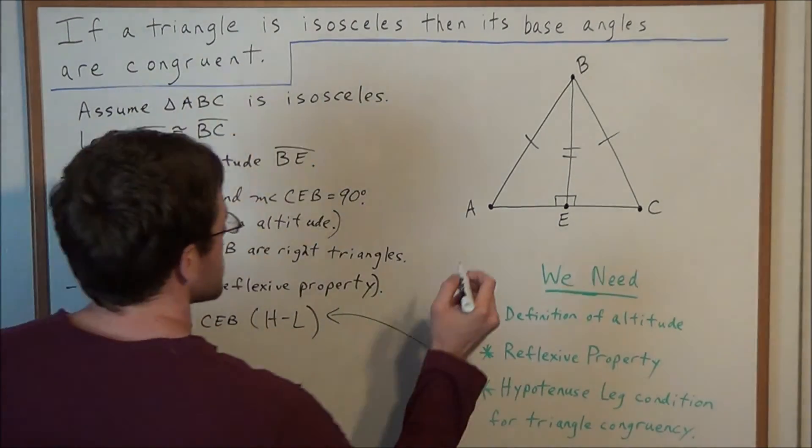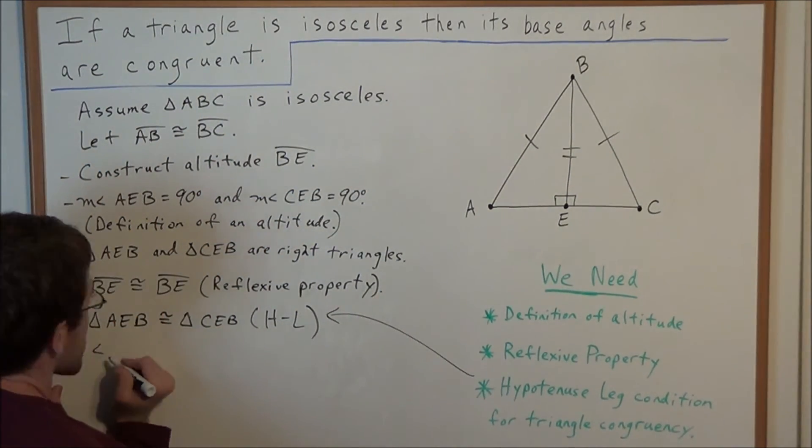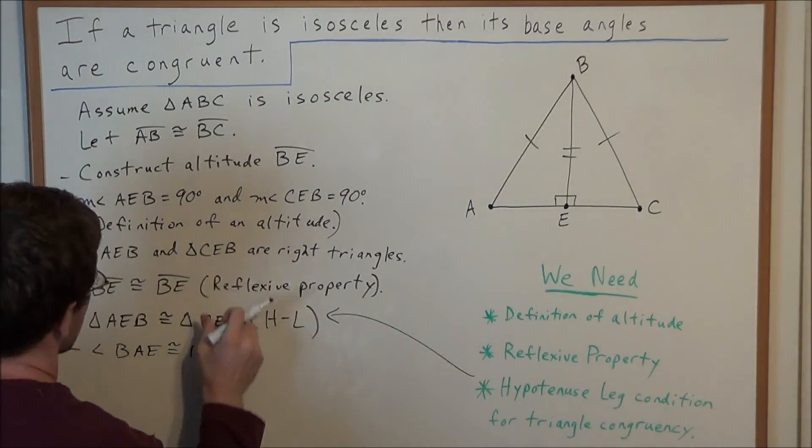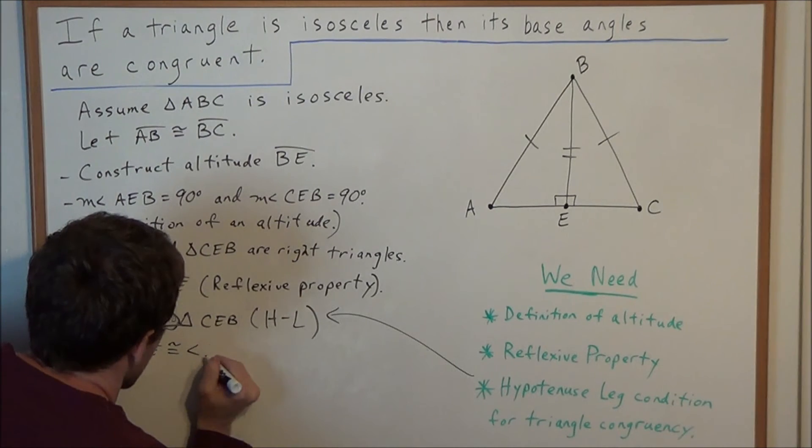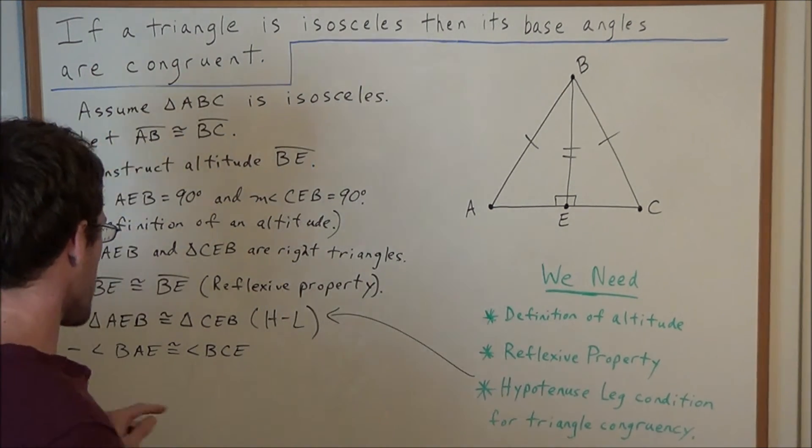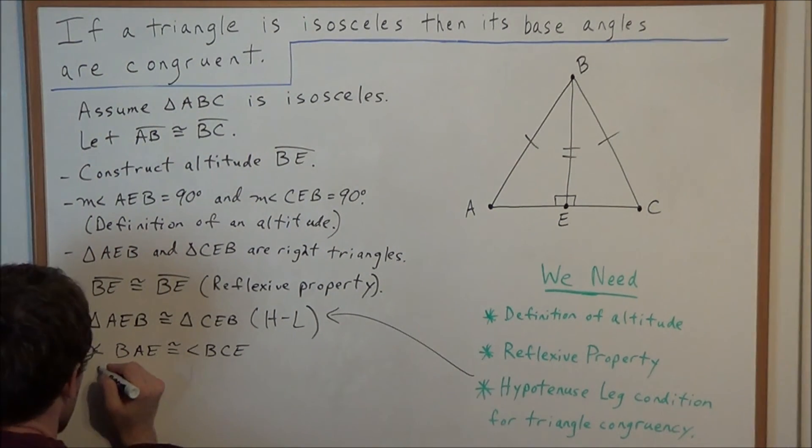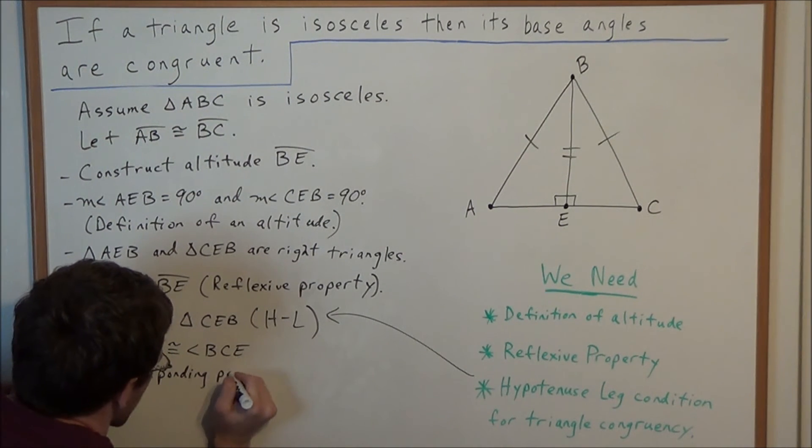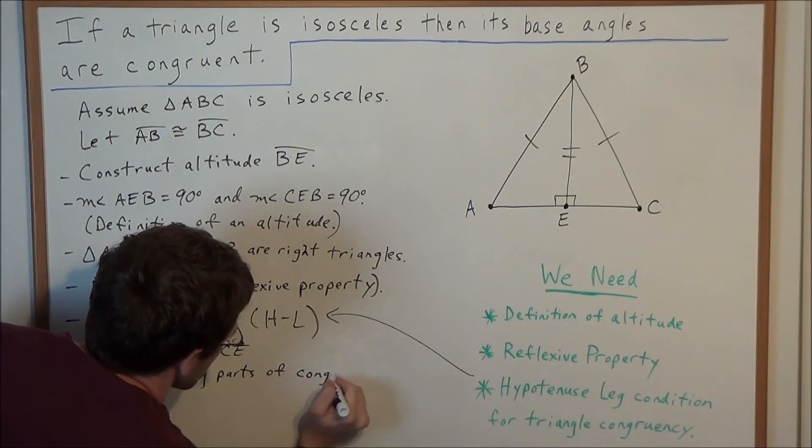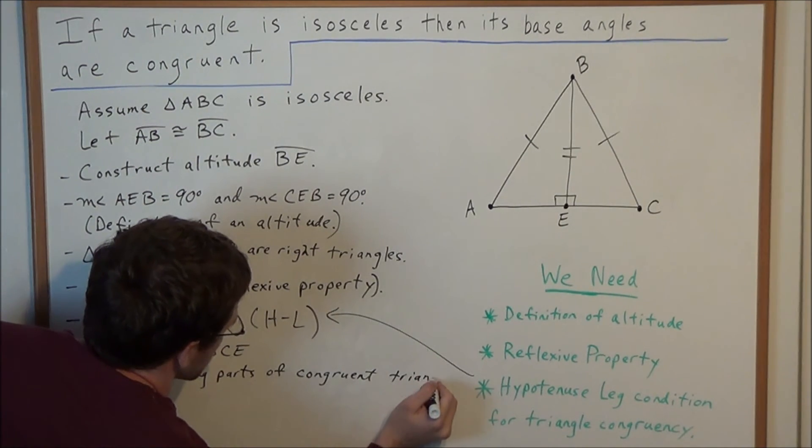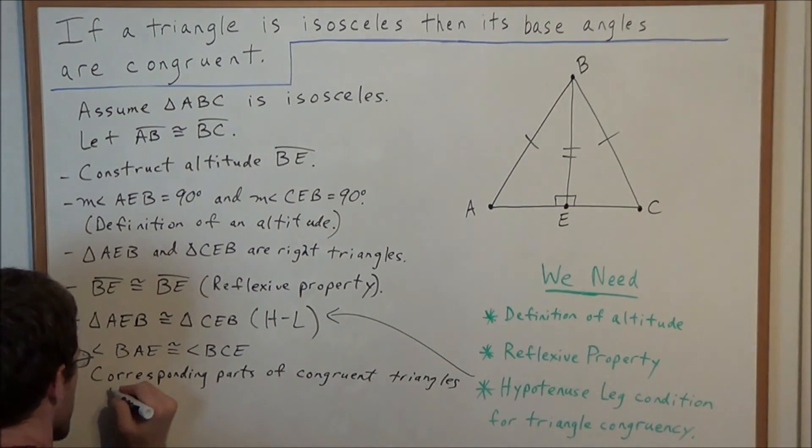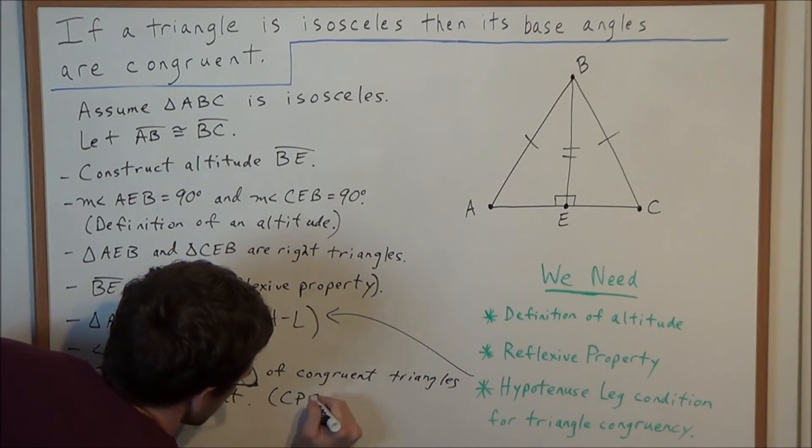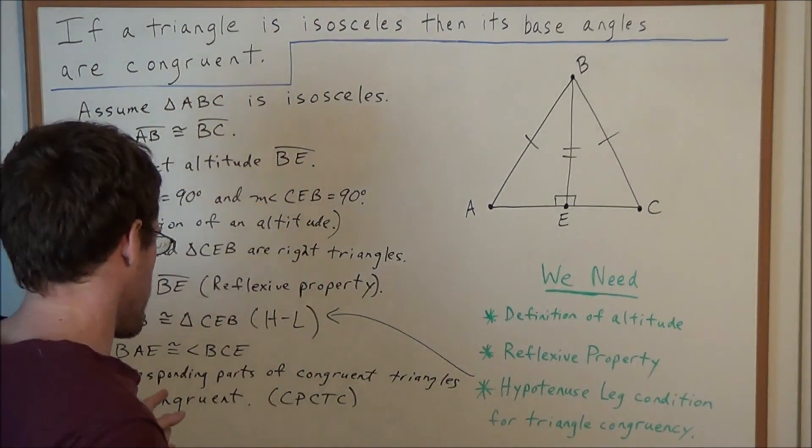So, now that we know these two triangles are congruent, we could say that angle BAE is congruent to angle BCE. And the reasoning why these two angles are congruent, well, corresponding parts of congruent triangles are congruent. And most teachers, when they write this reason down, they'll abbreviate it with CPCTC, which is just abbreviating this fact here.